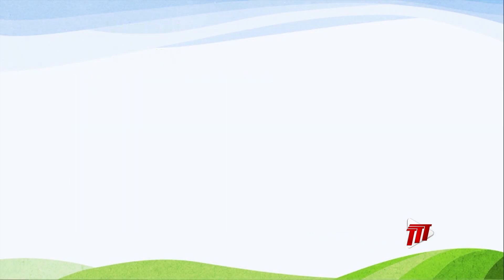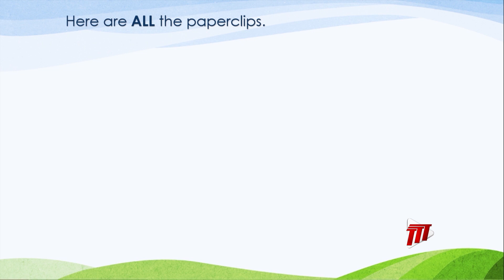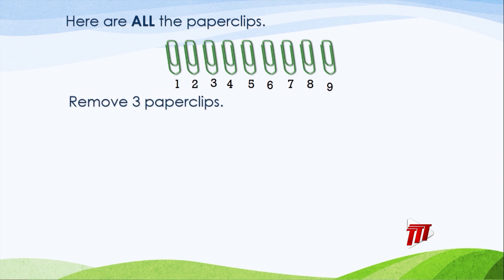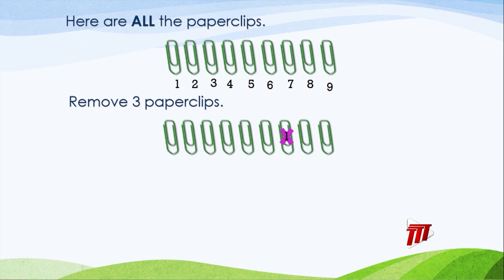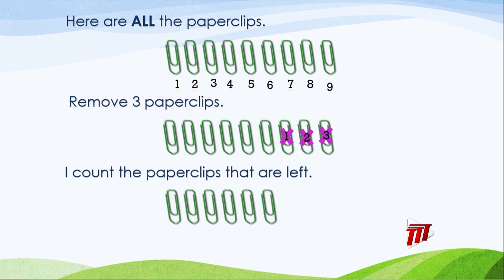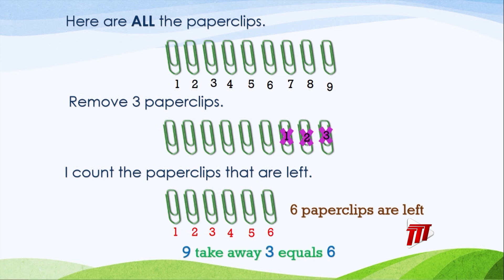Let's go to our screen. Here are all the paperclips — all nine: one, two, three, four, five, six, seven, eight, nine. Good job, boys and girls! I remove three paperclips — one, two, three. I count the paperclips that are left: one, two, three, four, five, six. Six paperclips are left. Nine take away three equals six.